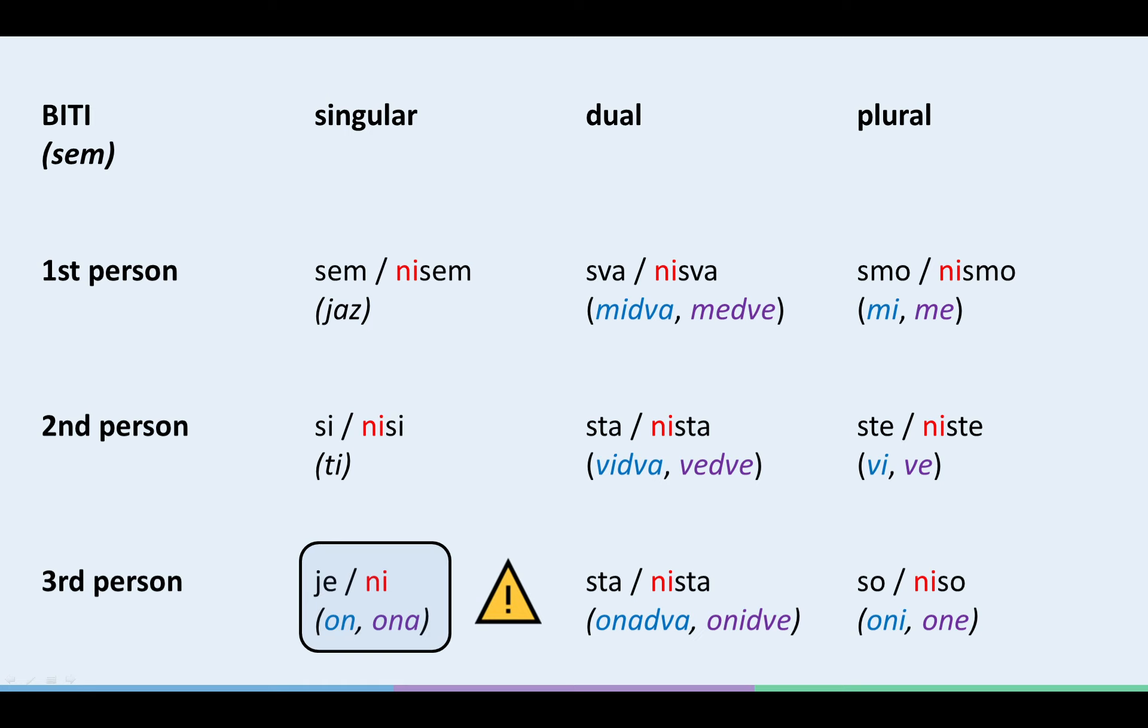In other words, NI means IS NOT, as in HE or SHE IS NOT. ON NI, HE IS NOT. ONA NI, SHE IS NOT.